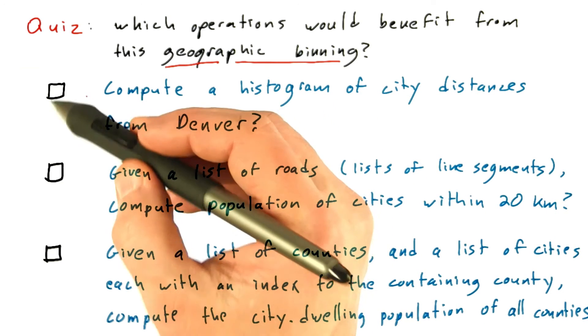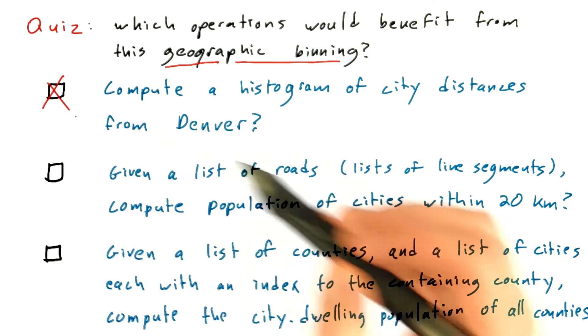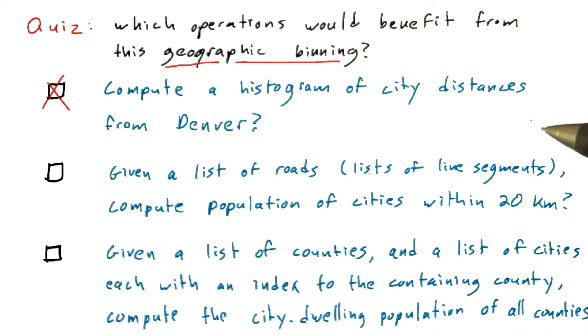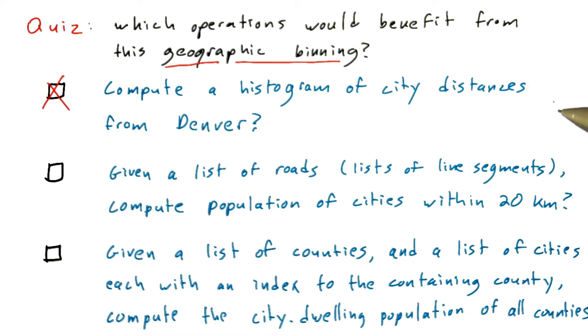So I would answer this no. It's not useful to use that geographic binning to compute a histogram of city distances, even though this is still a geographic problem and a binning problem.